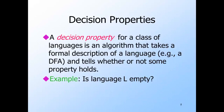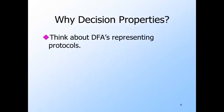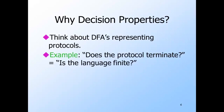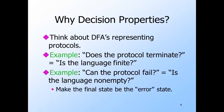A decision property for a class of languages is an algorithm that takes a formal representative of the language and answers some particular question about the language, such as whether or not the language described by the representation is empty. Here are a few examples of why we might be interested in decision properties of regular languages — both involve protocols represented by automata. If we ask whether the language of such an automaton is finite, we are in effect asking whether the protocol it represents is guaranteed to terminate. Or if we make the final states of the automaton be error states, then asking if its language is empty is tantamount to asking whether the protocol can fail.